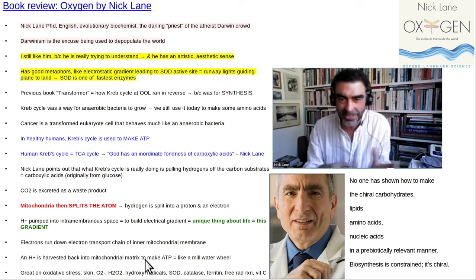That process runs through ATP synthase — complex number five, if you will — and it's like a mill water wheel. The energy of harvesting the gradient, letting the H+ come back along its desired direction, is used to add a phosphate to ADP to make ATP. ATP is adenosine triphosphate, the energy currency of the cell — like a $20 bill equivalent in a cell.